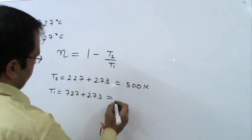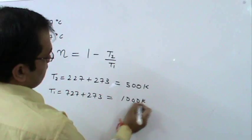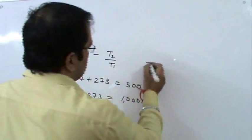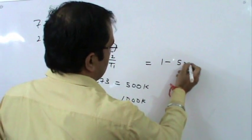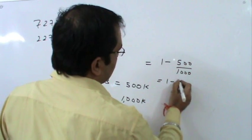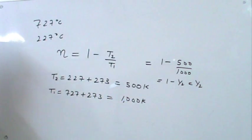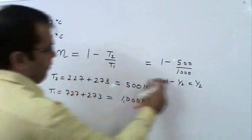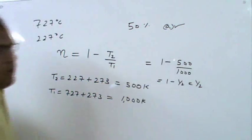So maximum efficiency is 1 minus 500 upon 1000, that is 1 minus one-half, that is one-half. So maximum efficiency is one-half or 50%. Therefore, option A is correct.